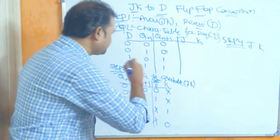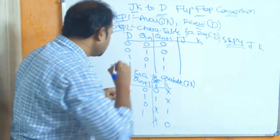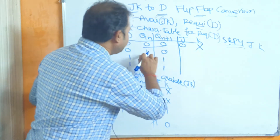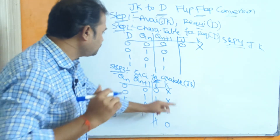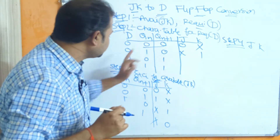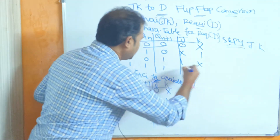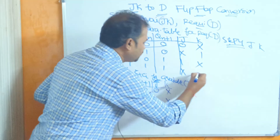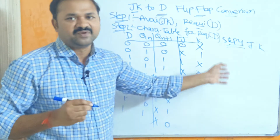The inputs are D and Qn. Observing the J column: when Qn, Qn+1 are 0,0 the J output is 0, don't care. When Qn, Qn+1 are 1,0 the output is don't care, 1. When Qn, Qn+1 are 0,1 the output is 1, don't care. When Qn, Qn+1 are 1,1 the output is don't care, 0.